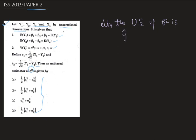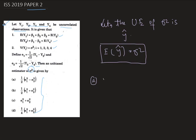Let ŷ be an unbiased estimator of σ². By definition of an unbiased estimator, E[ŷ] = σ². Now ŷ must be one of the four given options, so let's check the first option, which is (1/2)(e1² − e2²).